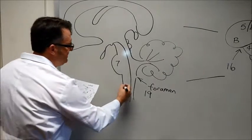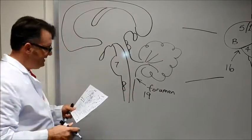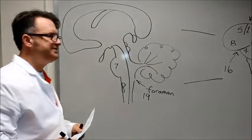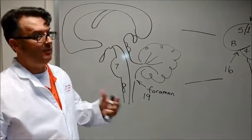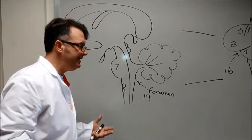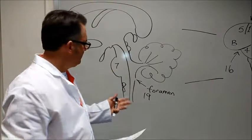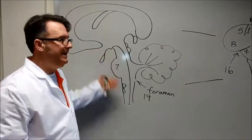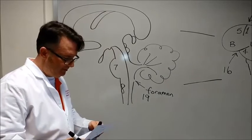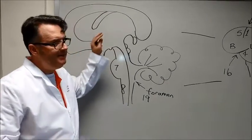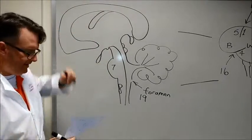Number eight is the medulla oblongata. It's important because there are tracts here, white tracts that carry—and why are they white? Because they have fat. Why are they white? They have myelin on them. These are what carry information to the brain and then information away from the brain. Also while I am here let me talk about it for just a second.